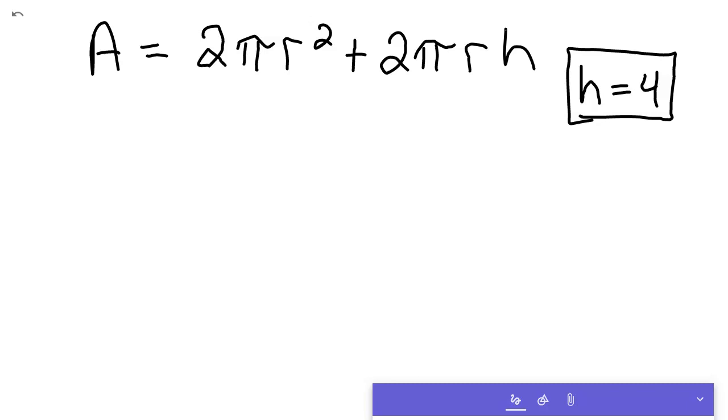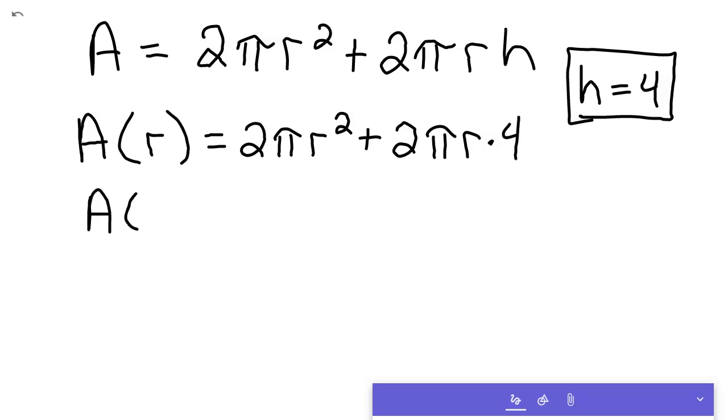And so we'll plug it in, and that allows us to set this function up in terms of r. So we've got a function in terms of r, which would now become 2πr² plus 2πr times 4. And if we rearrange that, we've got A(r) equals 2πr² plus 8πr.